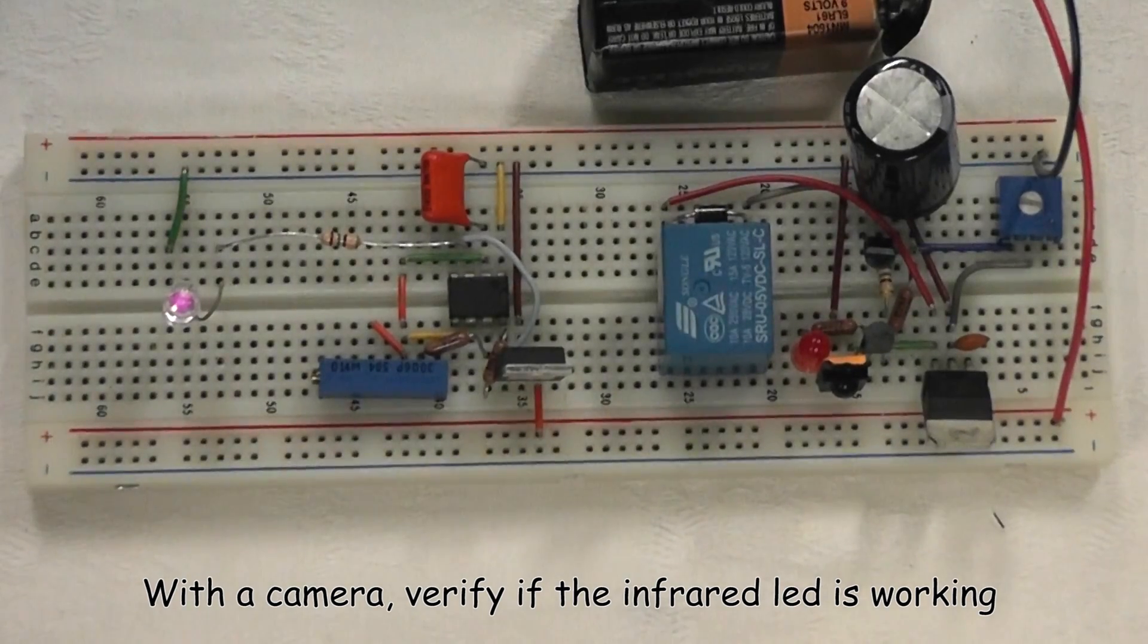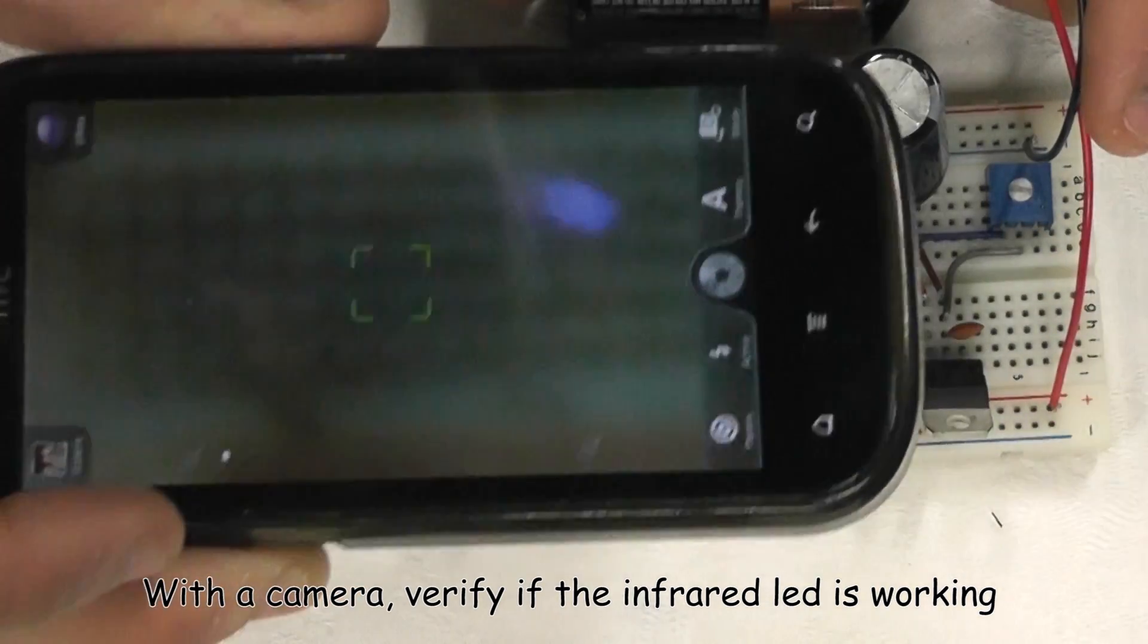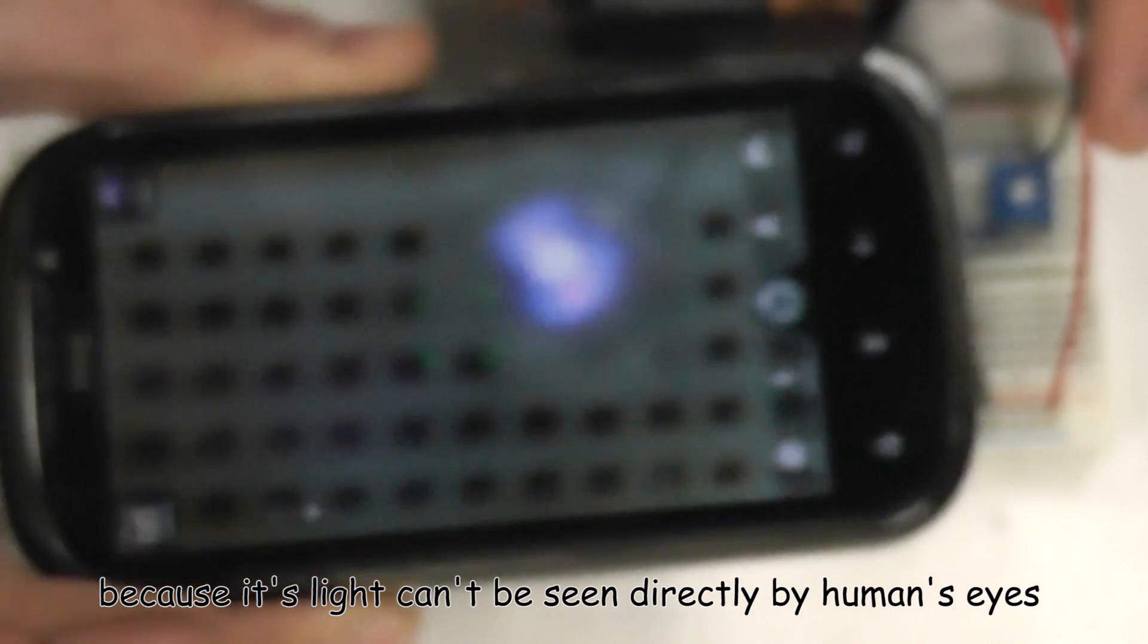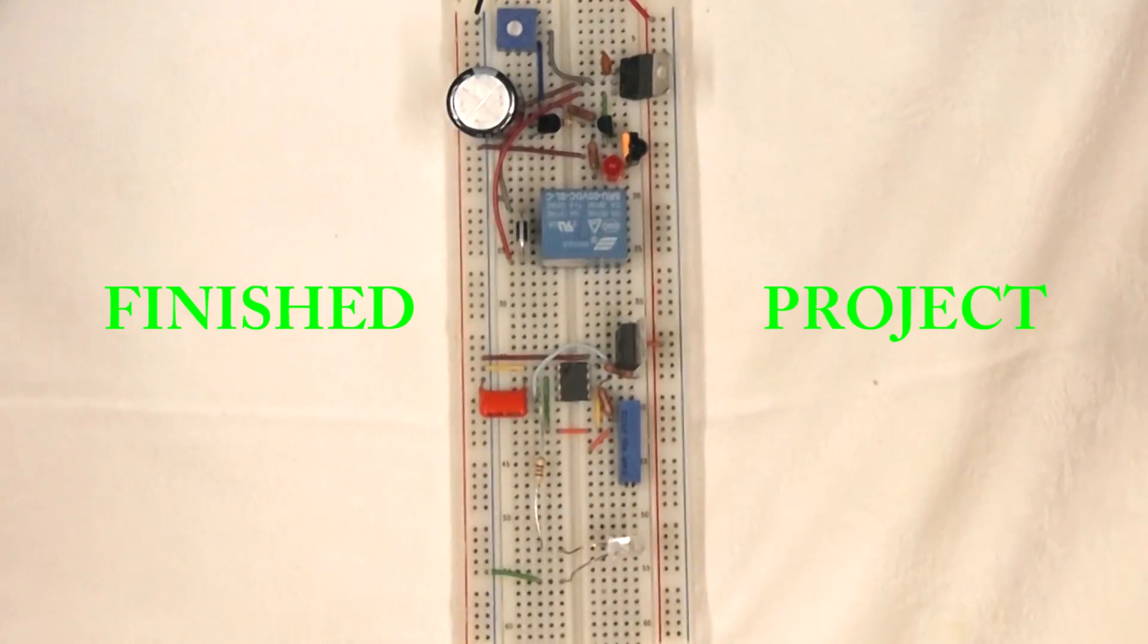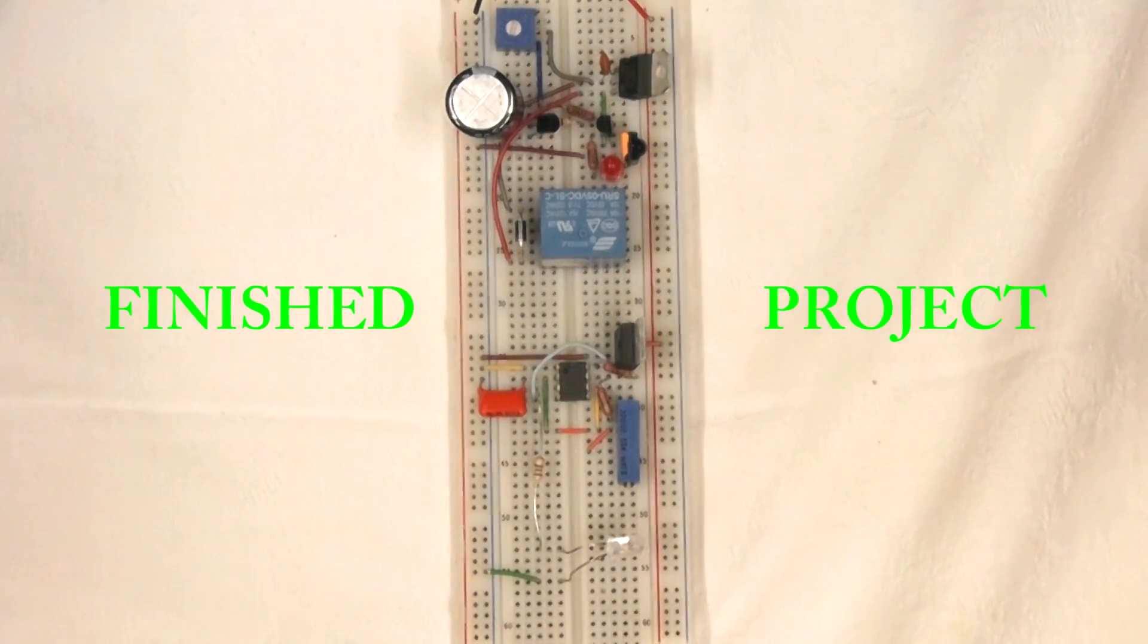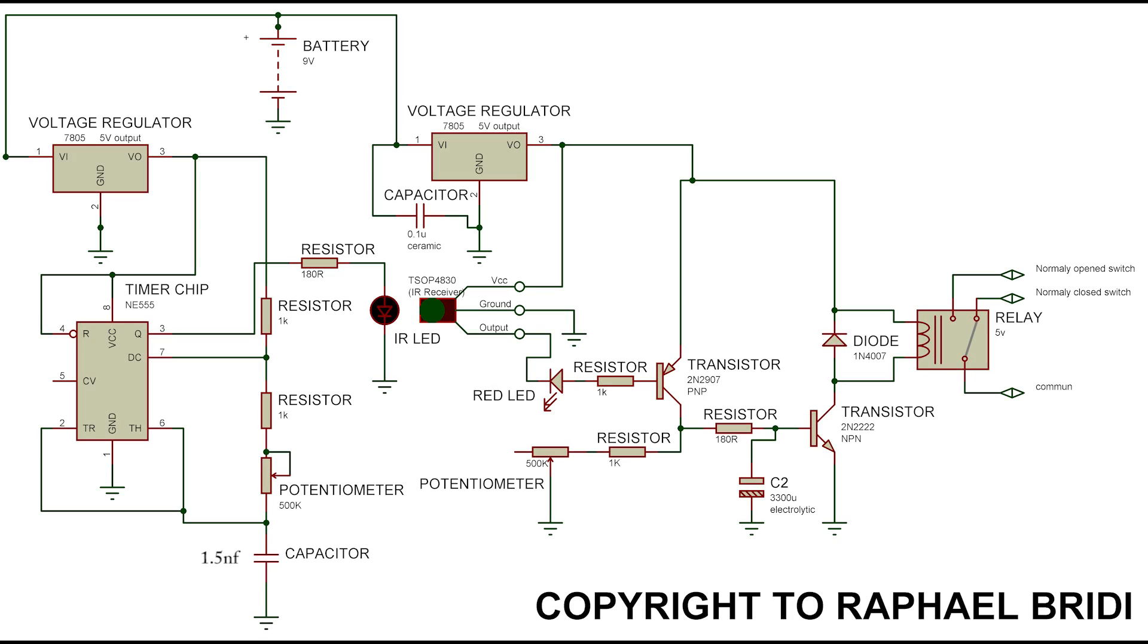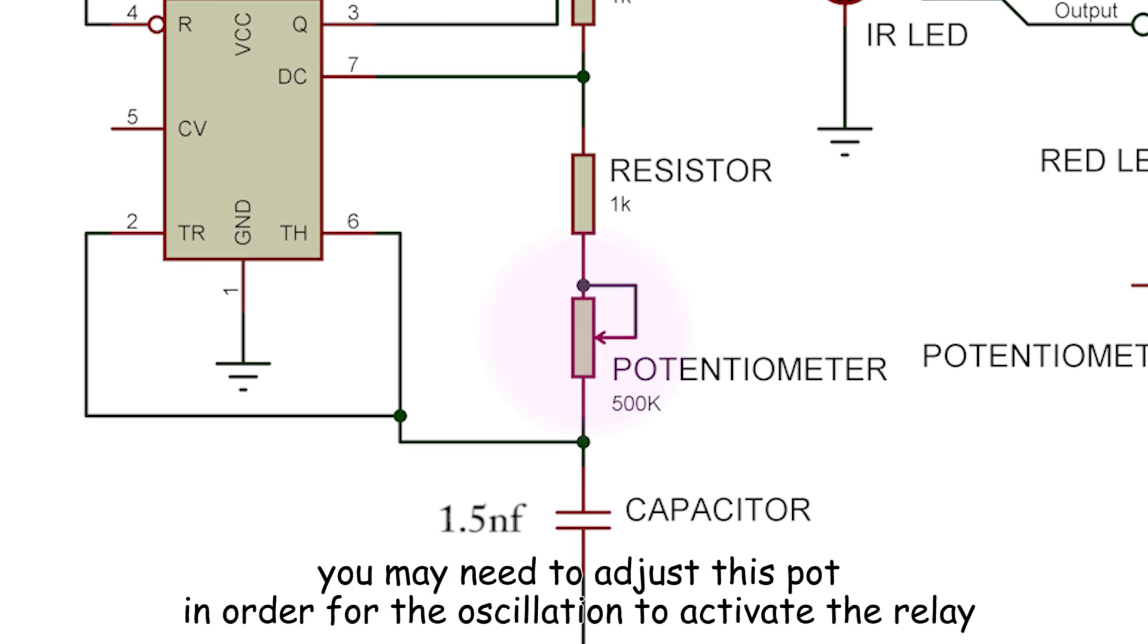With a camera verify if the infrared LED is working because it can't be seen directly by human eyes. You may need to adjust the pot in order for the oscillation to activate the relay.